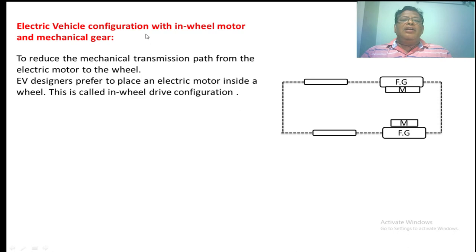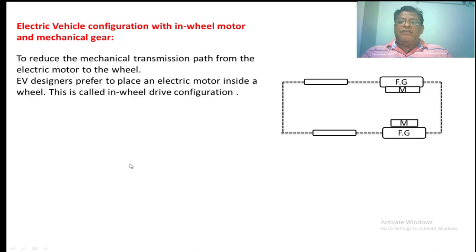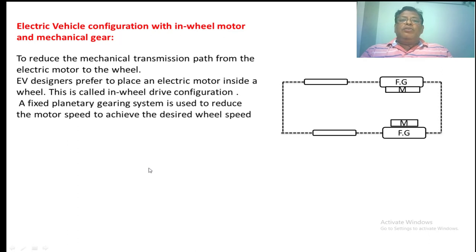The next configuration is the electric vehicle with an in-wheel motor and mechanical gearing. In this case the motor is placed inside the wheel with a fixed gearing system, which eliminates the differential. The motor kept inside the wheel is the in-wheel arrangement of the electric vehicle.